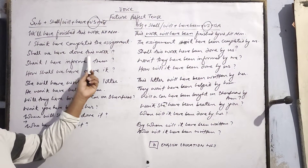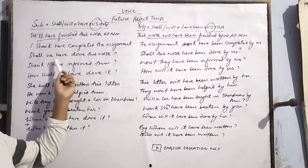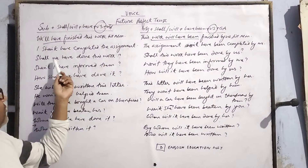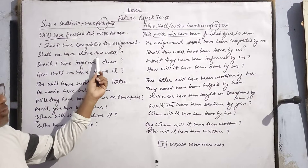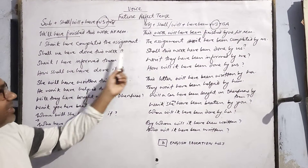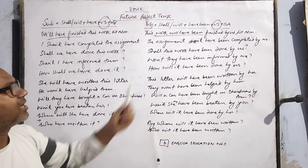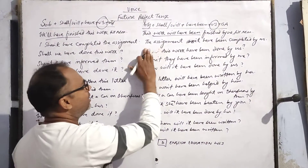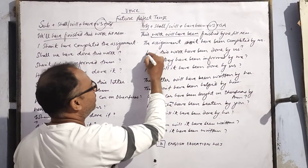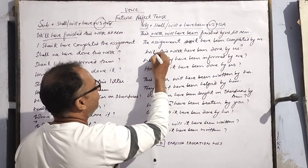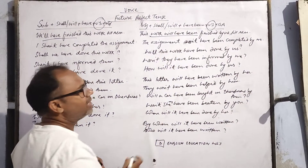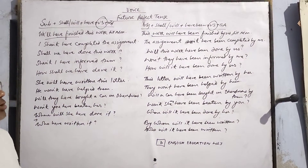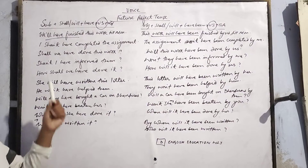Shall we have done this work? क्या हम लोग इस काम को कर चुके होंगे? In passive, 'shall' becomes 'will': Will this work have been done by us?